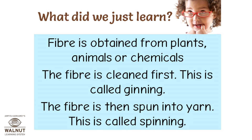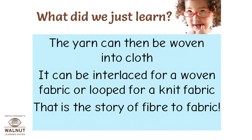What did we just learn? Fibre is obtained from plants, animals, or chemicals. The fibre is cleaned first — this is called ginning. The fibre is then spun into yarn — this is called spinning. The yarn can then be woven into cloth. It can be interlaced for a woven fabric or looped for a knit fabric. That is the story of fibre to fabric.